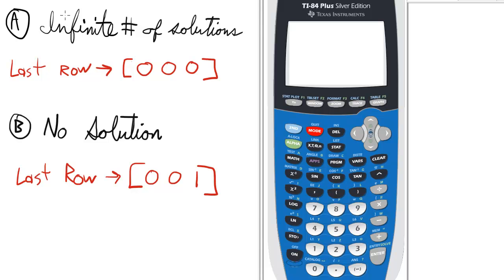The two exceptions you'll find when solving a matrix by RREF are infinite number of solutions, and the last row will be all zeros.